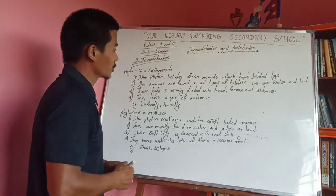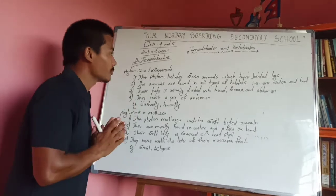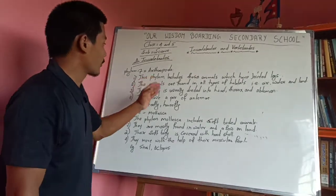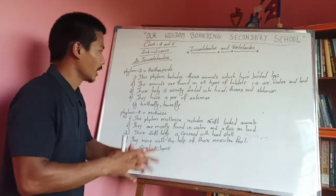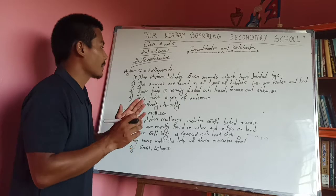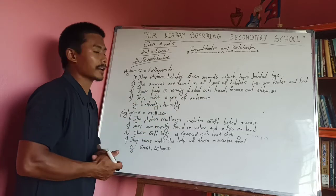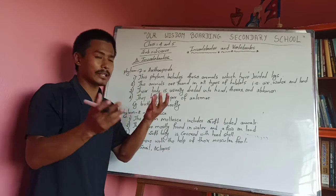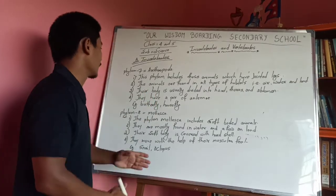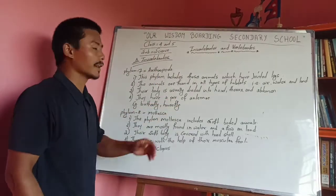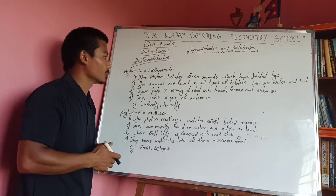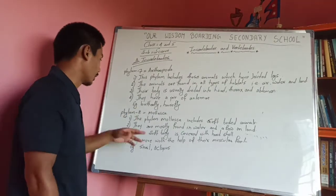Phylum 7 is Arthropoda. These animals are found in all types of habitats — air, water and land. Their body is usually divided into head, thorax and abdomen.